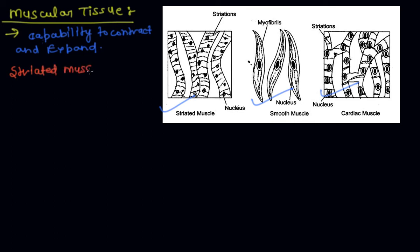The cells of striated muscles are in the form of long, unbranched fibers. Cells are multi-nucleate. Light and dark bands are present on muscle fibers, which gives the name striated muscles.